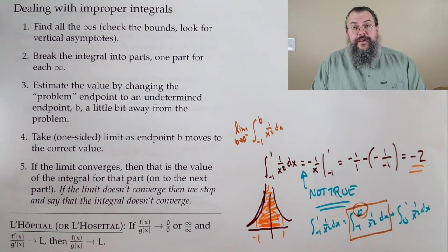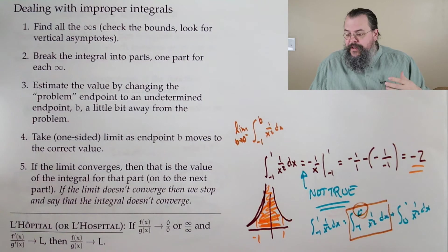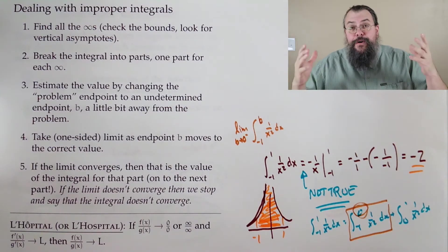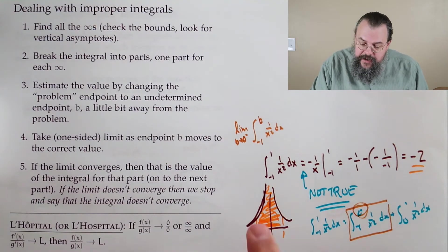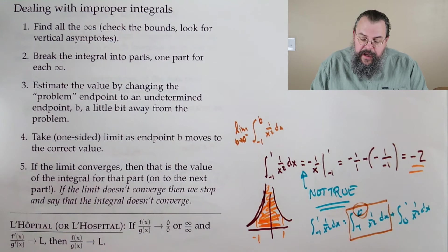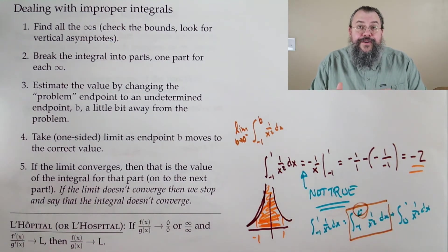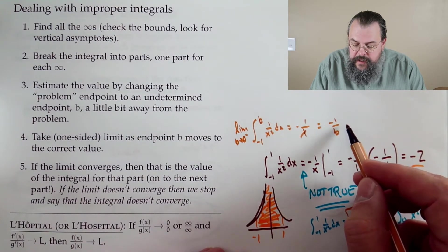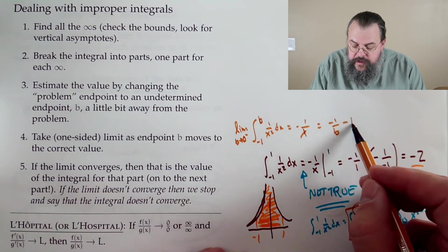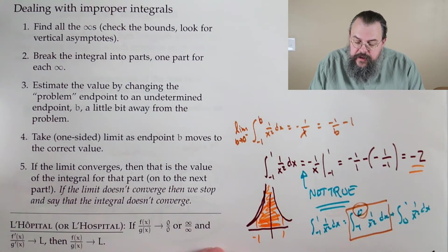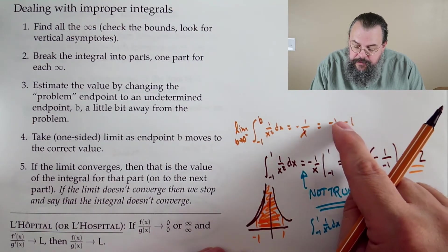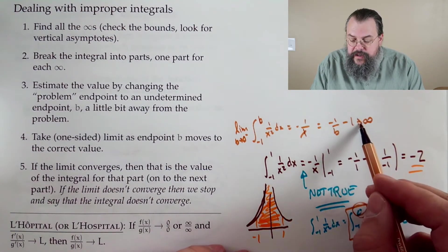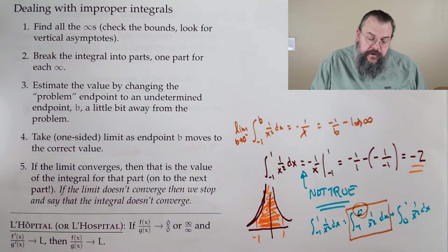Take a limit. This helps us solve the issue. Whenever you have things like infinity involved, you have to step back and say we can't really do things that involve infinite processes, but we can talk about what should happen. And that's what we do. If you do this and carry it out, this turns out to be negative one over X, you evaluate to get negative one over B minus minus one, which is minus one. You let B go to zero from below - it's negative one divided by a very small negative number, which is arbitrarily large. So it heads towards infinity.